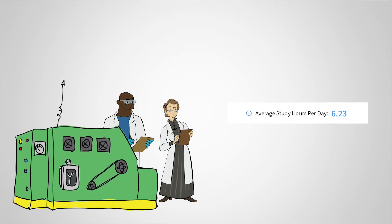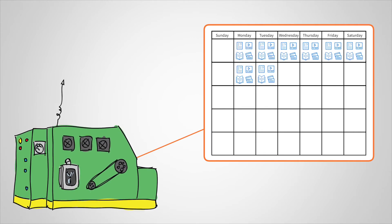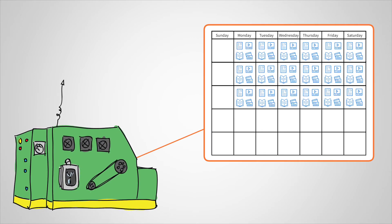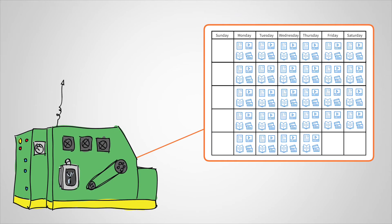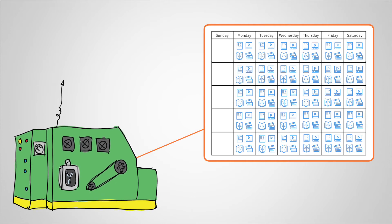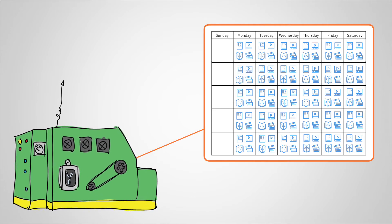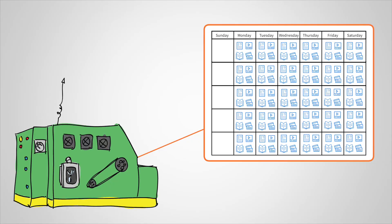Cramfighter creates a schedule by laying out your tasks so you have roughly the same amount of work each day. The amount of work each day will be exactly as much as it needs to be to ensure you cover every resource you've scheduled by the end of your plan.